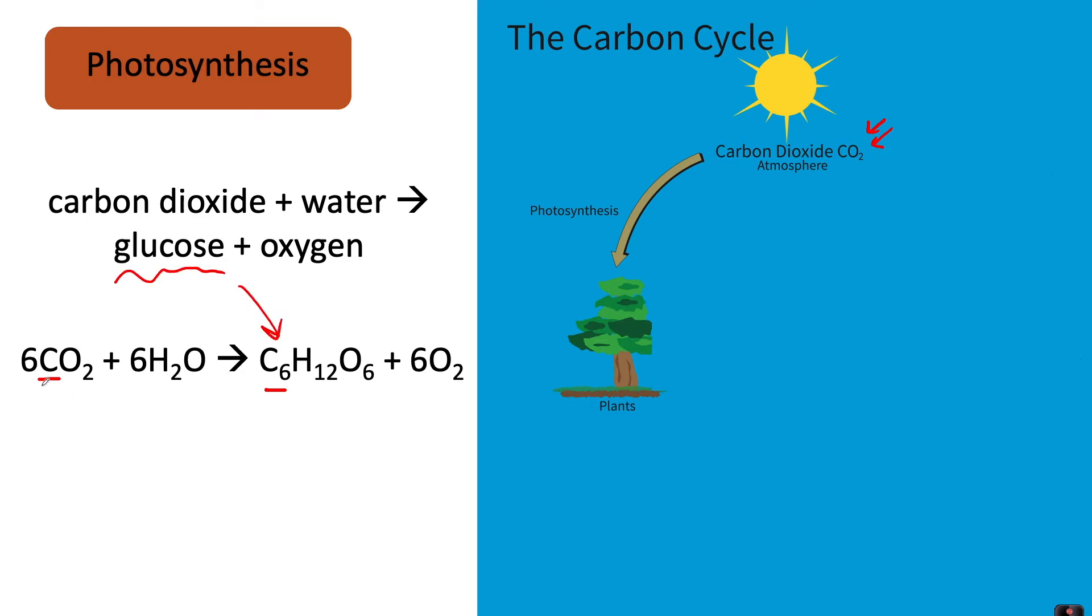This is one example of a reaction that cycles carbon, which was once in the carbon dioxide and ends up in glucose. The carbon dioxide that was in the atmosphere is now stored as part of the glucose molecule in plants.